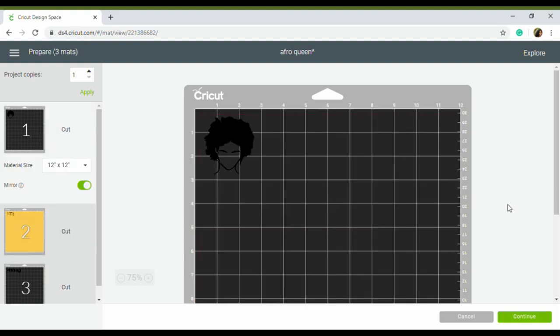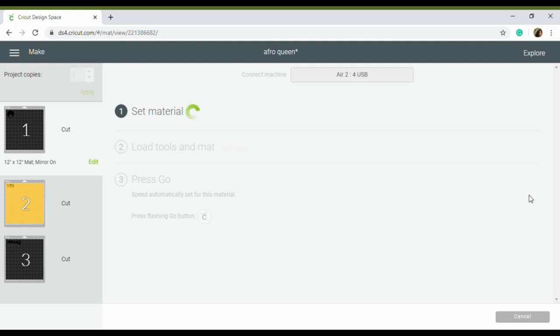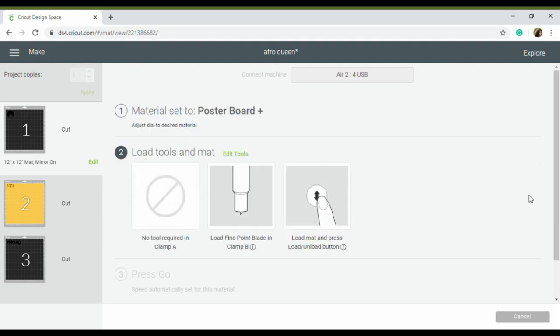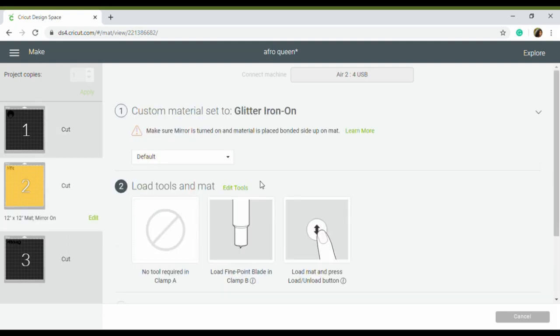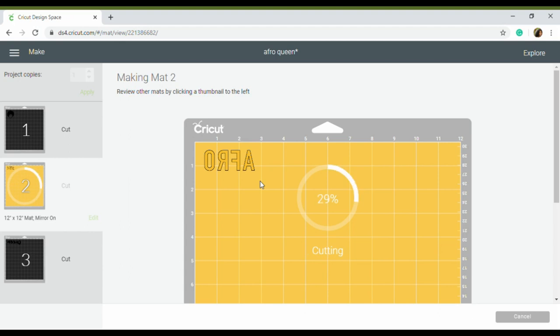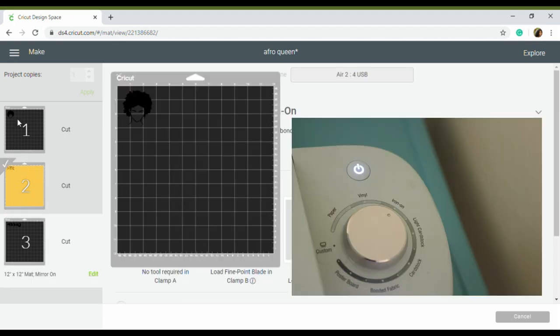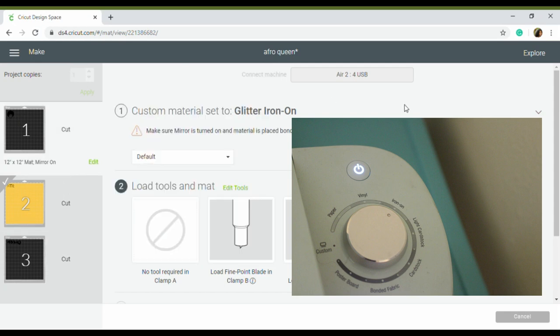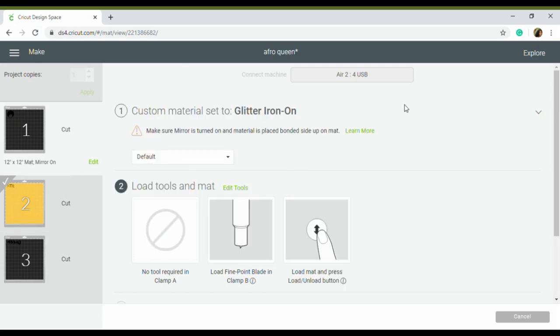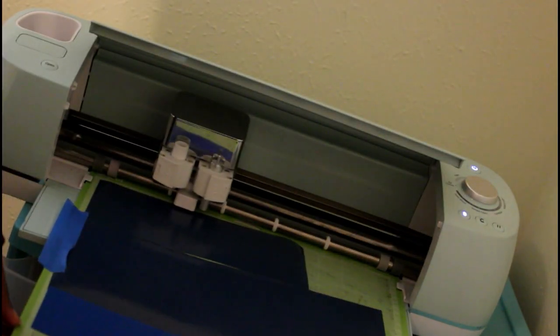I didn't have much black vinyl to work with, only scraps. That's why you see me taking one of my images and moving them to a different mat with the same color. So the next step after you render your mats, go ahead and click continue. Then your next step would be to make sure your material is set to the right material. If you are using glitter iron-on, make sure you go to custom and then type in glitter iron-on should pop up. And if you are using regular iron-on, just turn your dial over to iron-on.